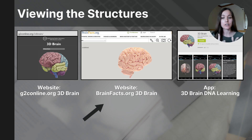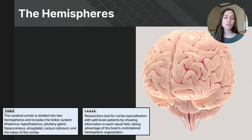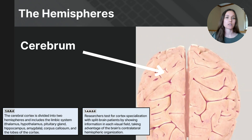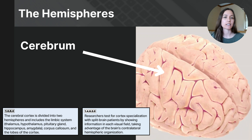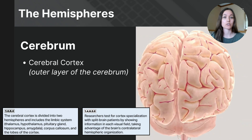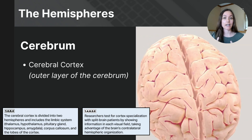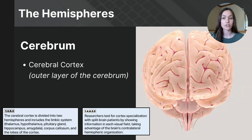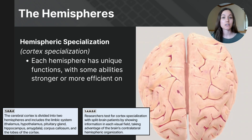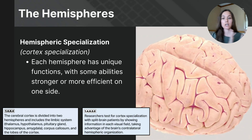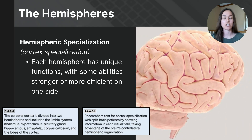I'm going to use brainfacts.org, generated from the Society of Neurosciences website. The cerebrum is the largest part of the brain and it's responsible for our higher-order functioning — things like decision-making, thinking, action, and sensory processing. It's also referred to as the cerebral cortex, and the cerebral cortex is divided into two hemispheres, the right and the left. Our hemispheres are uniquely specialized in their functions, which is the concept of hemispheric specialization — the distinct and unique functions predominantly managed by each hemisphere.